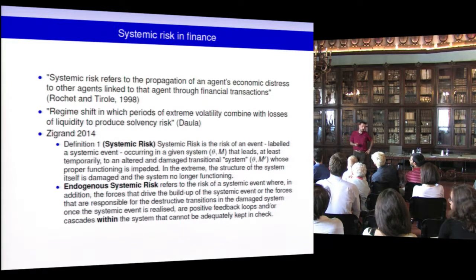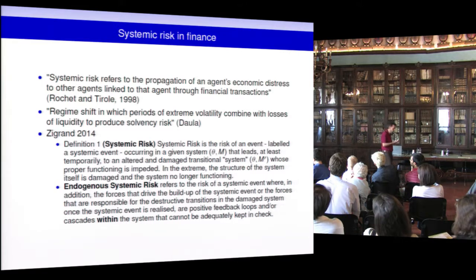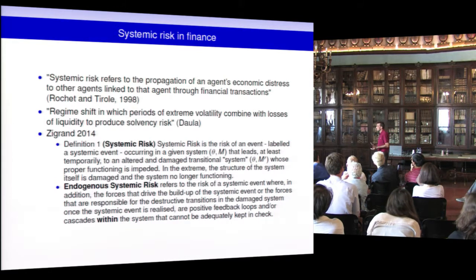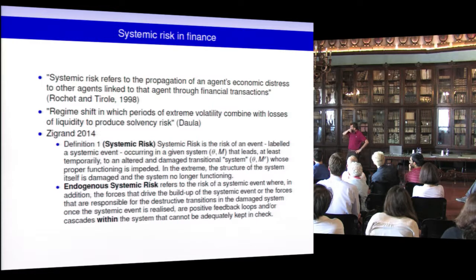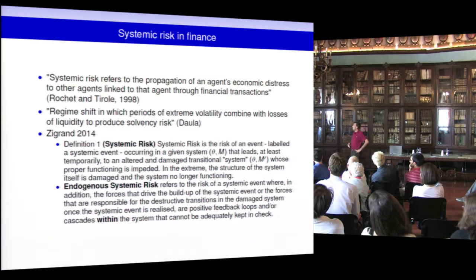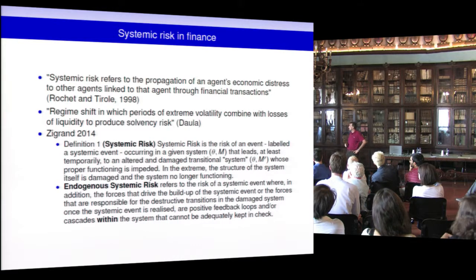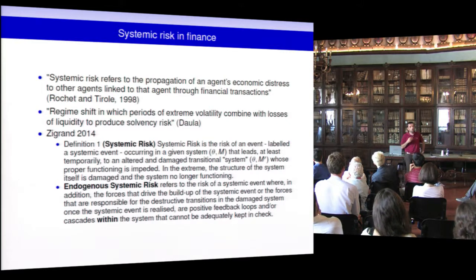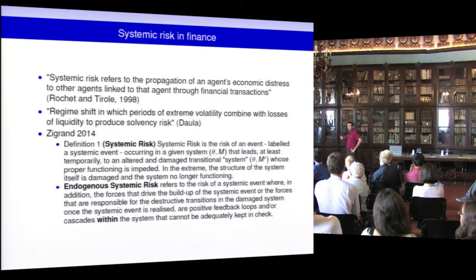One of the important topics is endogenous systemic risk — the most important topic. It's not about an earthquake destroying an economy, but the fact that endogenously the system creates the possibility of systemic risk. Zigrand defines endogenous systemic risk as the risk of a systemic event where the forces that drive the buildup, or are responsible for the destructive transition, are positive feedback loops and cascades within the system that cannot be adequately kept in check. The system can evolve itself toward a state where it endogenously creates conditions susceptible to systemic events, not through an external condition.